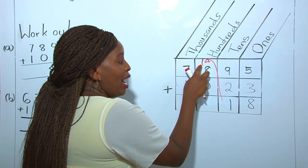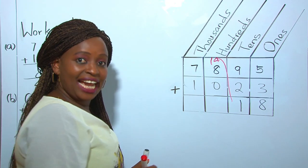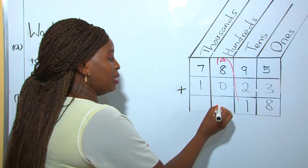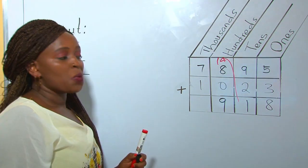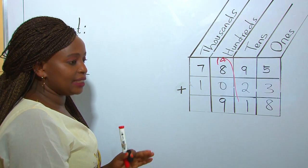So 1 plus 8 becomes 9, and we list 9 down there. We have regrouped tens into hundreds.